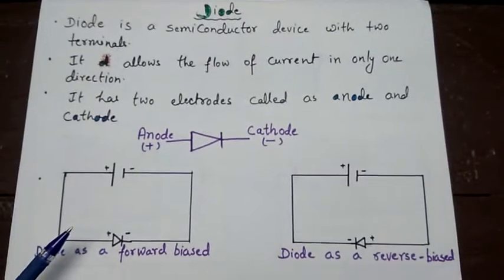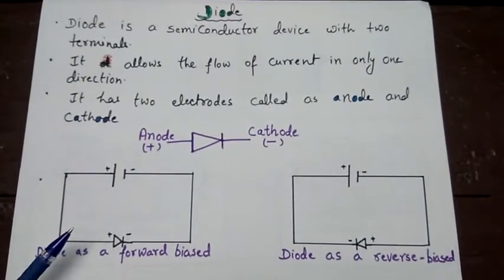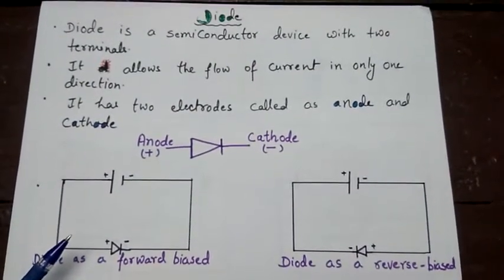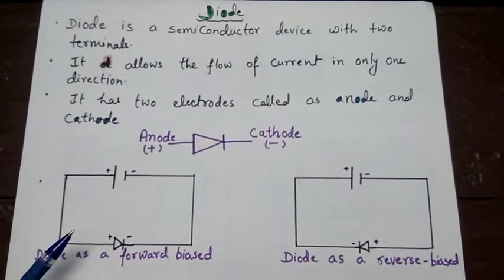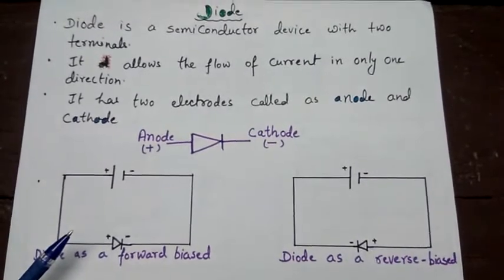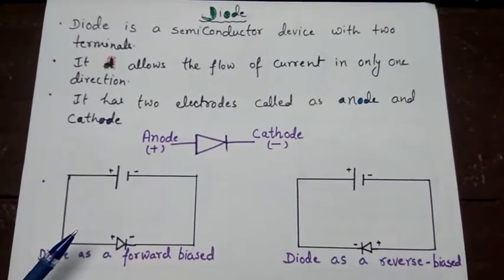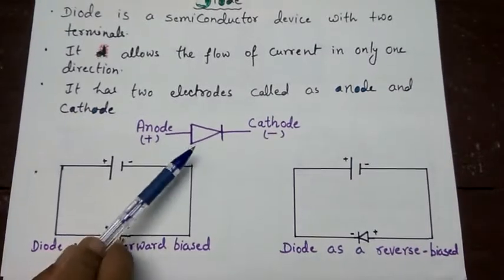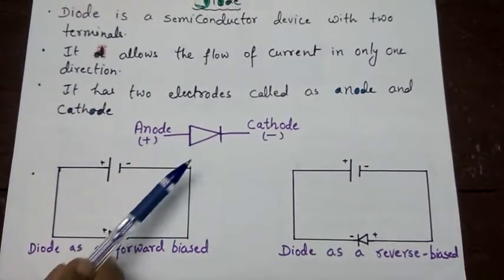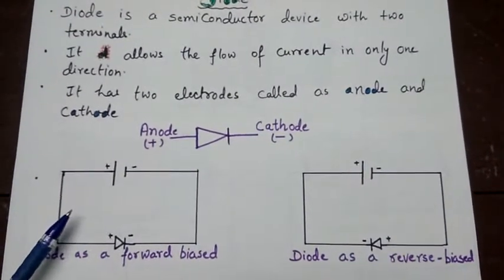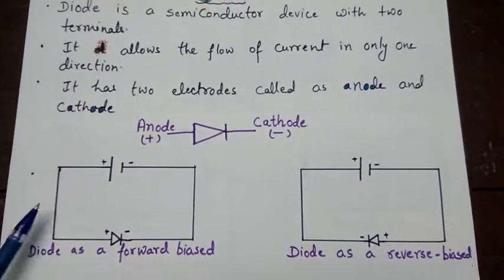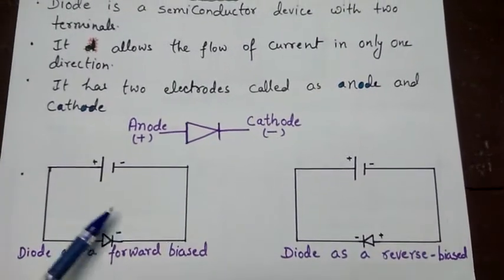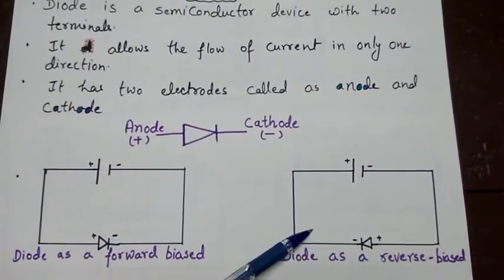Today, I am going to talk about diode. A diode is a semiconductor device which allows the current to flow in one direction only. It has two electrodes called anode and cathode. This is the symbol for a diode. A diode can be used in an electrical circuit in two ways: forward biased and reverse biased.